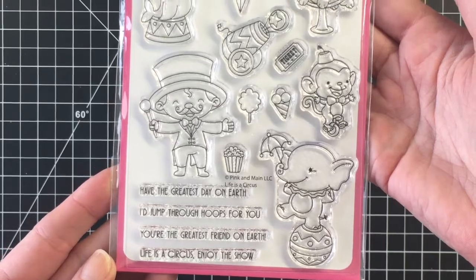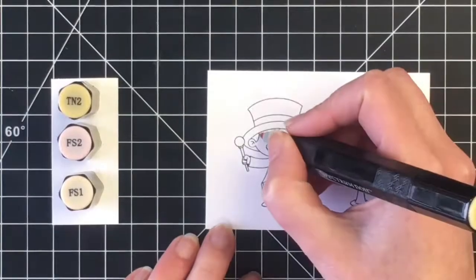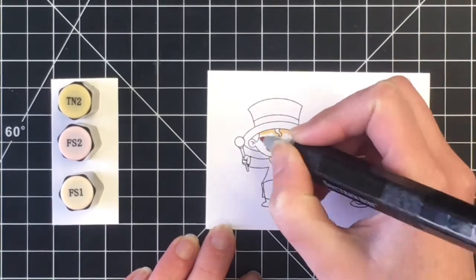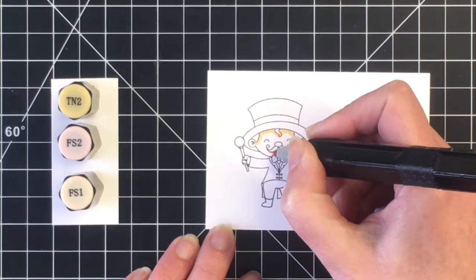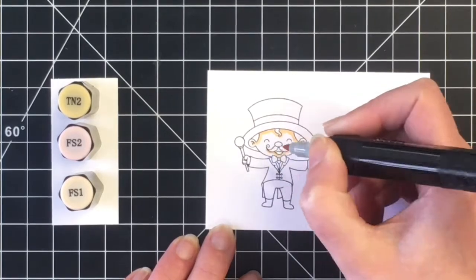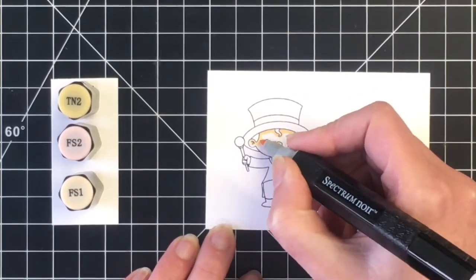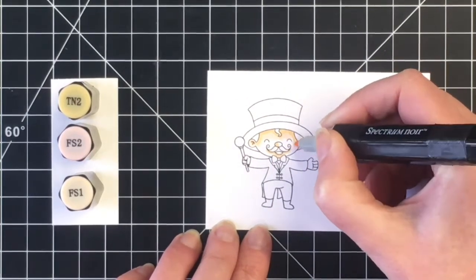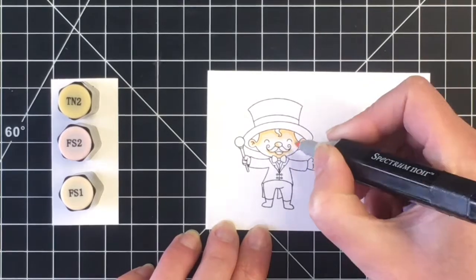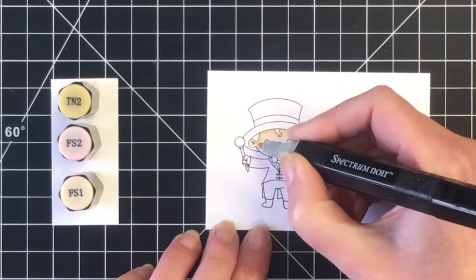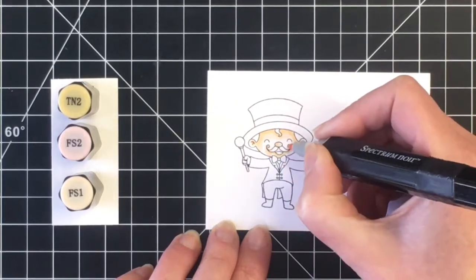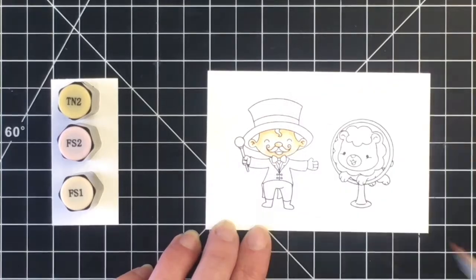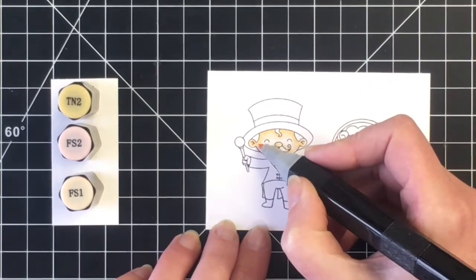The whole time I was making this card, I was singing the Greatest Showman soundtrack to myself. So I colored up our little showmaster here in the same colors from the character in the movie. I'm starting out with the skin tones. I'm using Spectrum Noirs today. The last video that I did with Spectrum Noir markers had a lot of comments saying that you enjoyed seeing me color with these markers, so I thought I would bring them back again today.